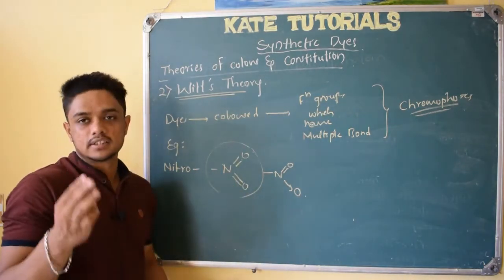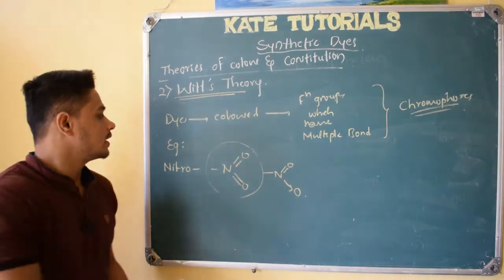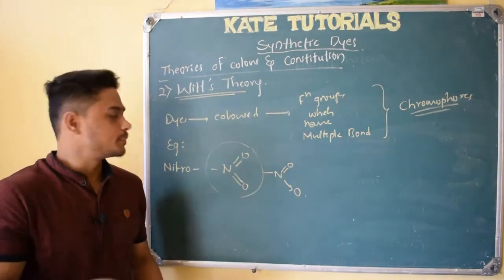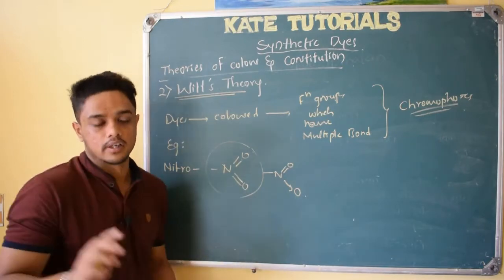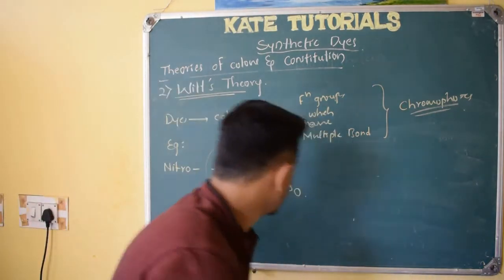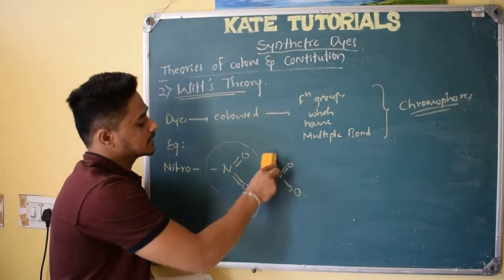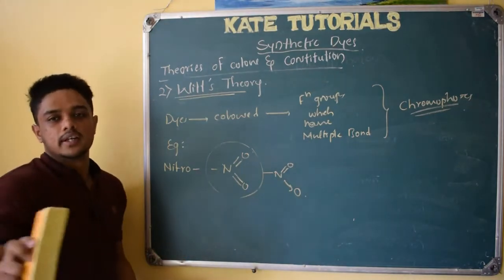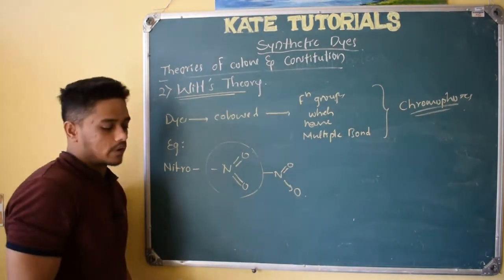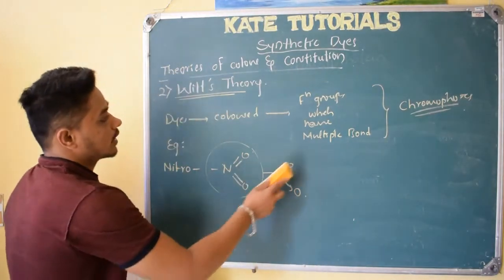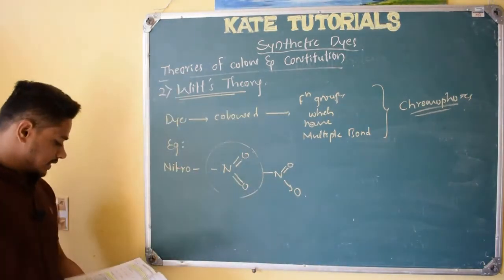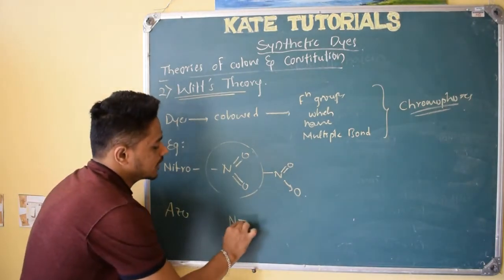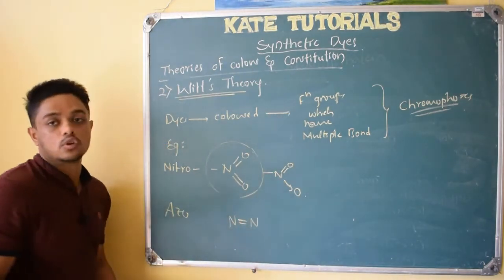The valence of Nitrogen is three and it has one lone pair. But here it has involved all five valencies. In actual speaking, it follows only the octet rule, but if you write it expanded, that's okay too. The exact picture is the coordinate bond representation. So the Nitro group is one chromophore.